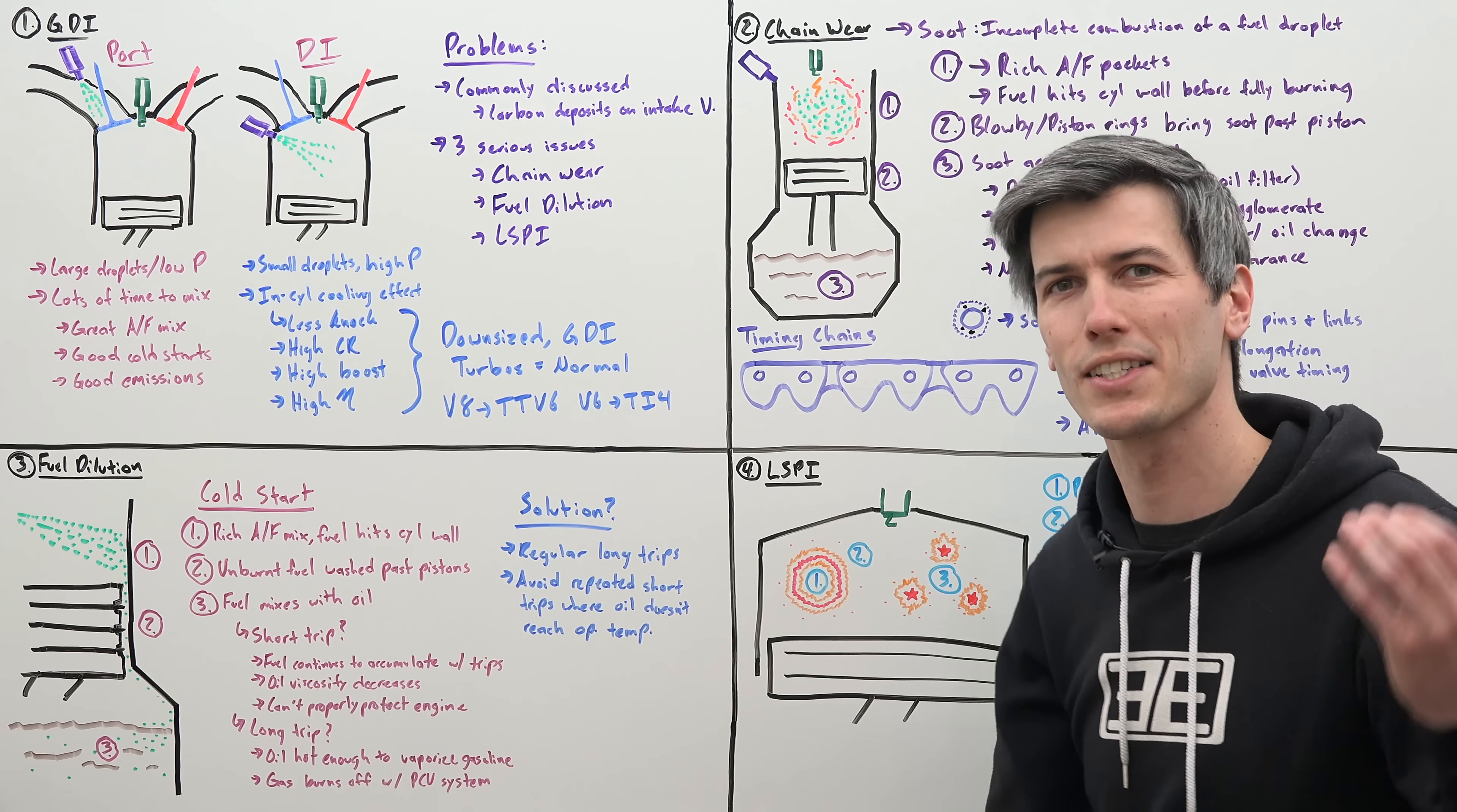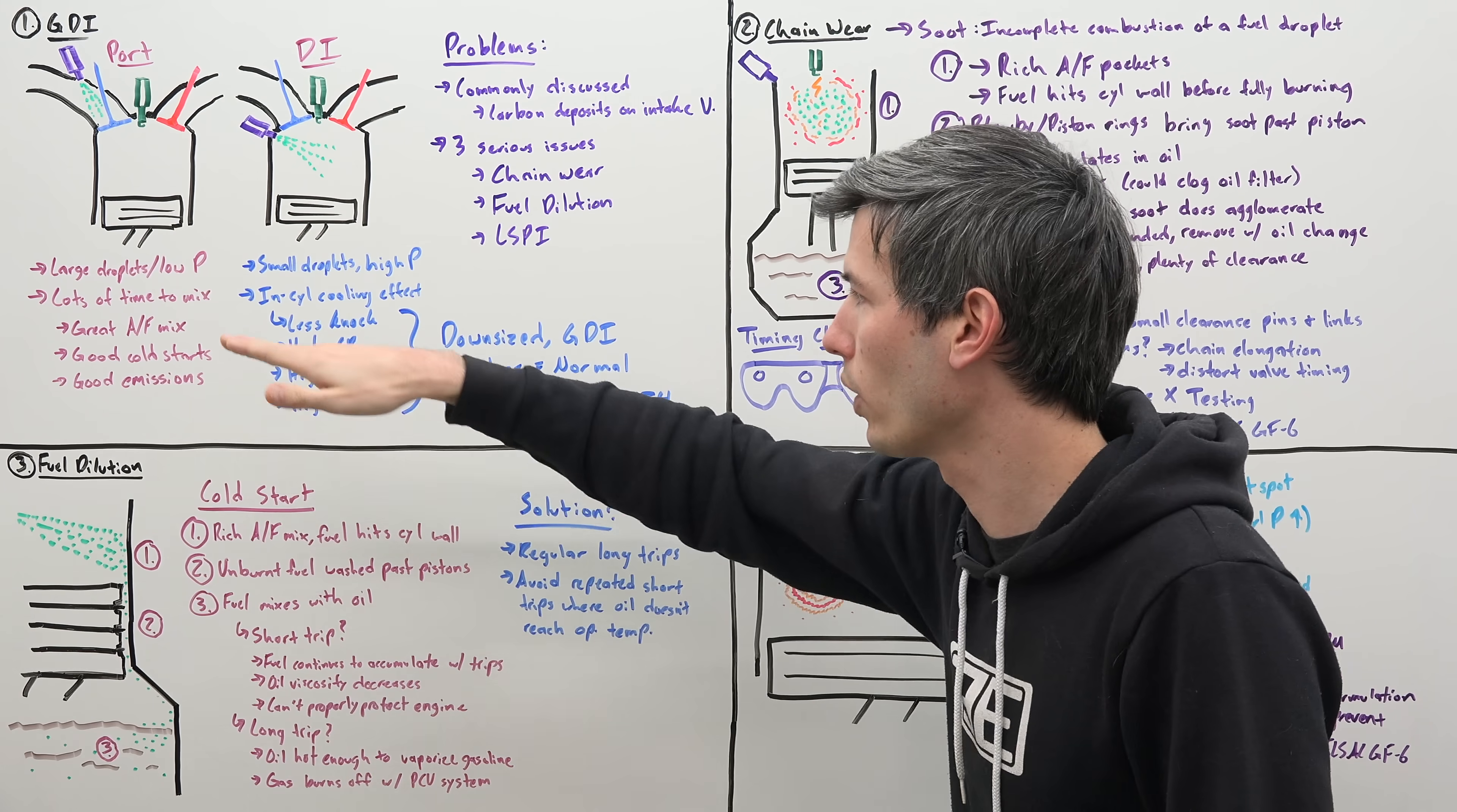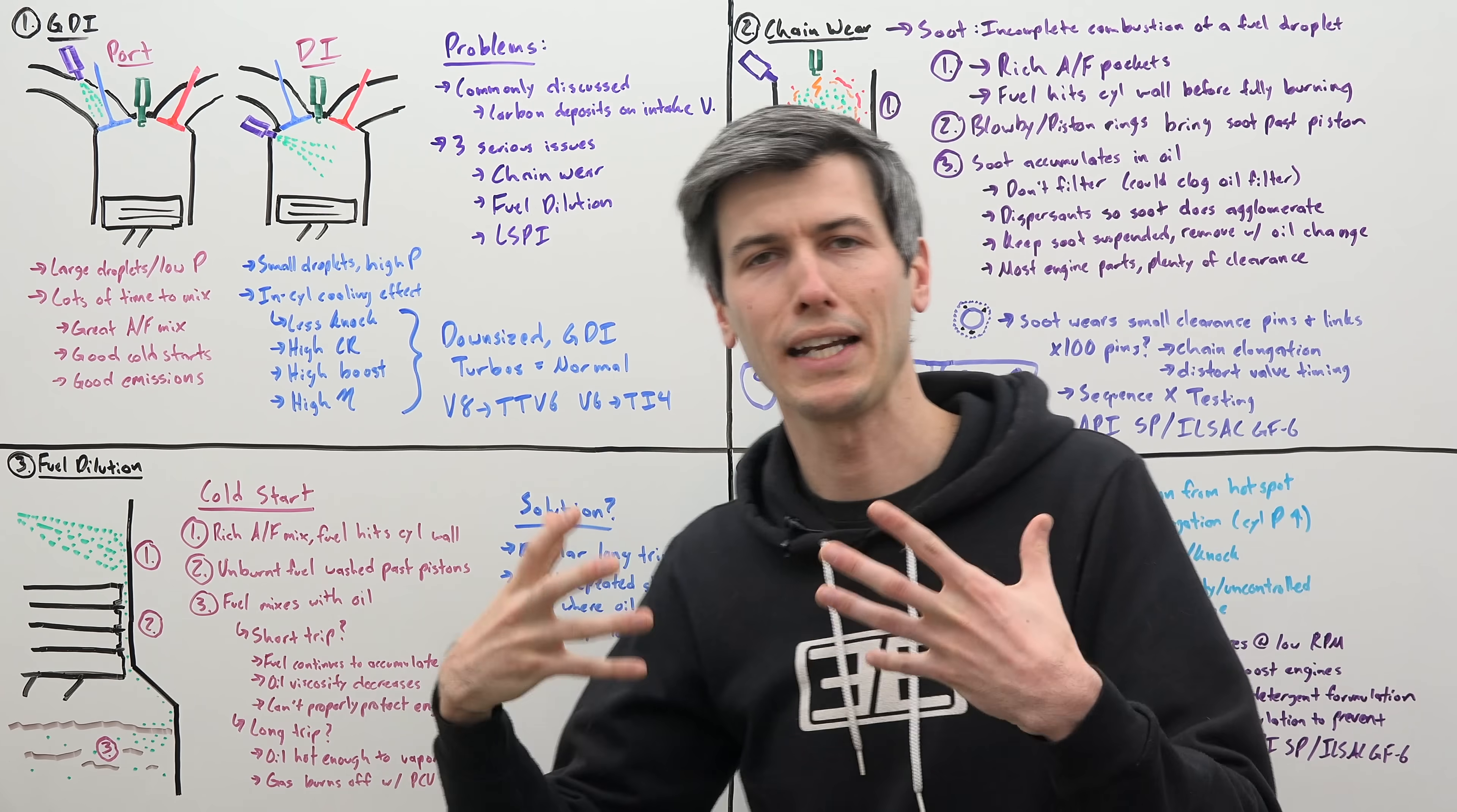Whereas with direct injection, you may still be injecting fuel during that compression stroke, so it has much less time to mix. You have lots of time for the fuel to mix with the air, which gives you a great air fuel mixture with port injection. This is great for cold starts and emissions to make sure all that fuel and air is well mixed.